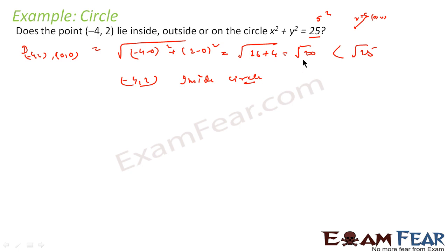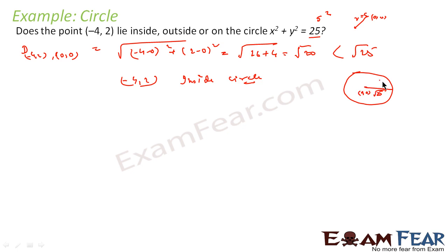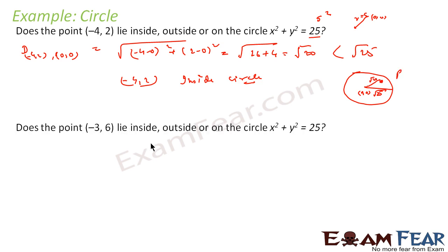Since the distance √20 is less than r = √25, we can say that the point (-4, 2) lies inside the circle. If the distance had been more than √25, we would say the point lies outside the circle. We can see from the diagram that (-4, 2) is located within the circle, with this distance of √20 being less than the radius √25.